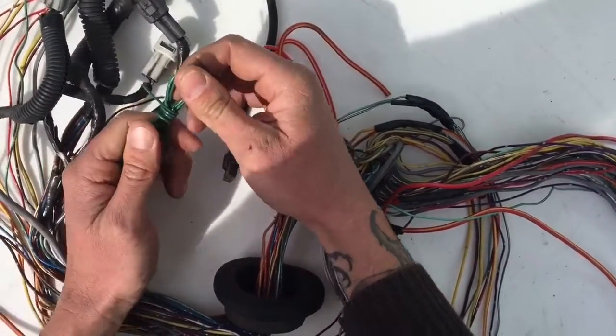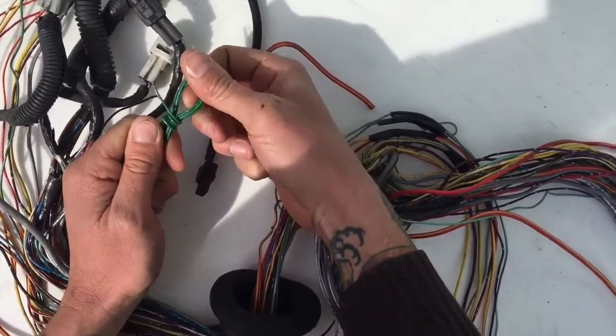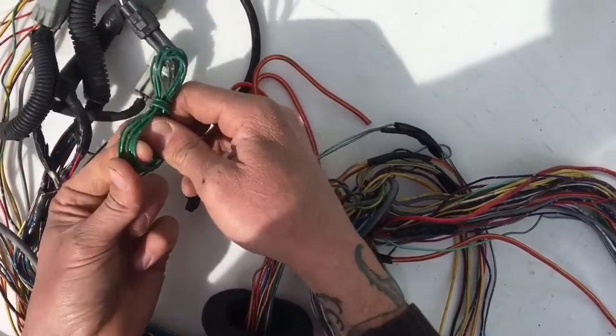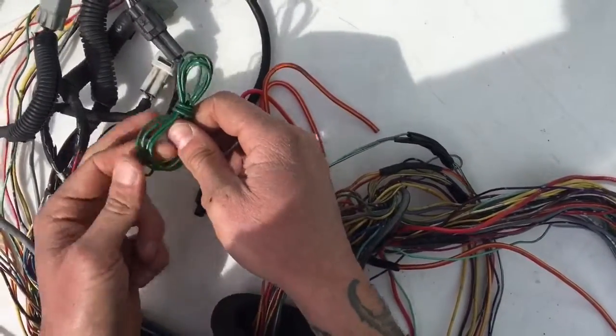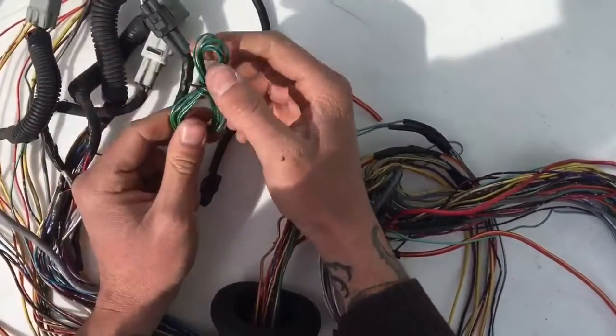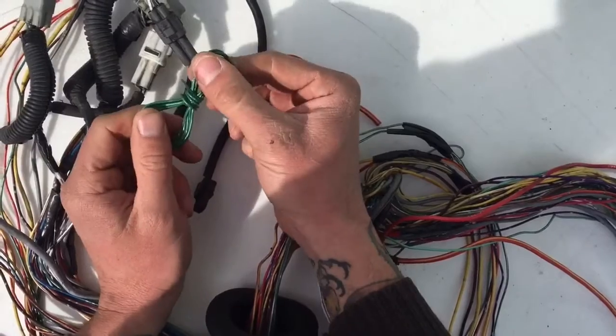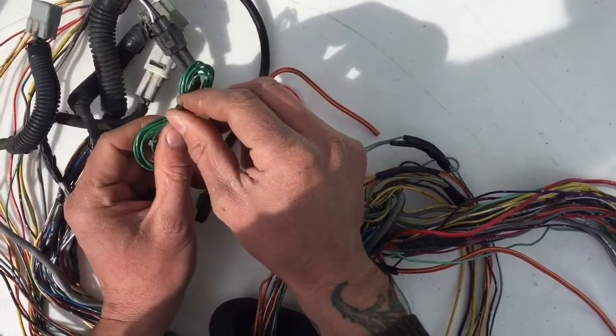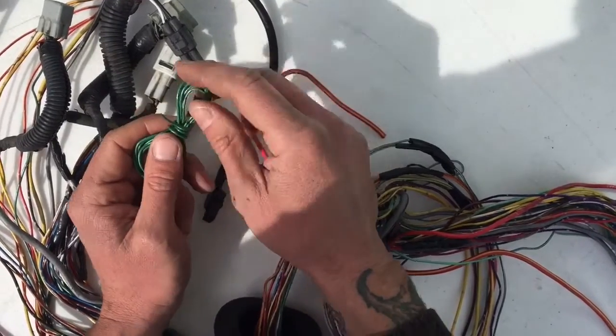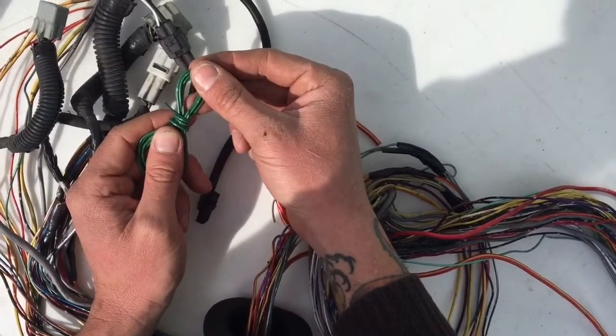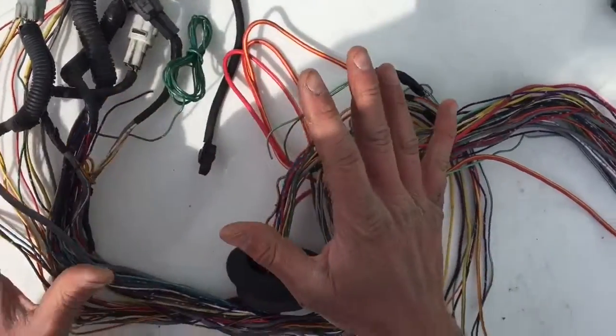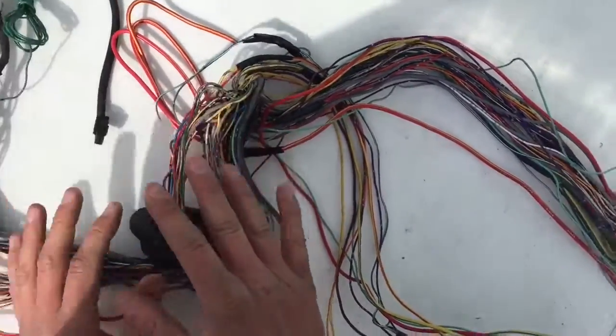So I'm actually going to label this and keep it labeled here at the engine so that the owner of the harness can then install this to the VW bus oil pressure switch wire in the engine bay. So that wraps up our identification of wires.